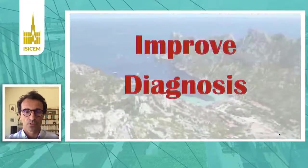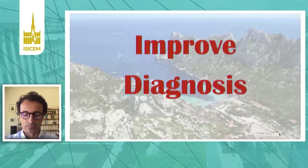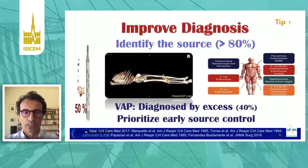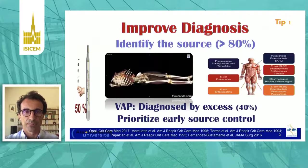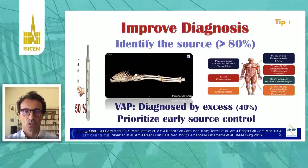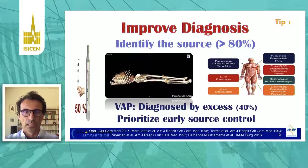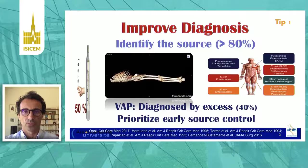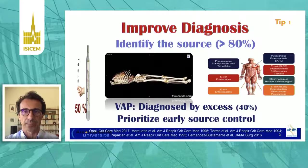First, improve diagnosis. I'd like to talk about source identification. This point is very important. If you don't identify the source of infection, you cannot treat your patient adequately. And if you look back at your file, you should find a source identification in more than 80% of patients.